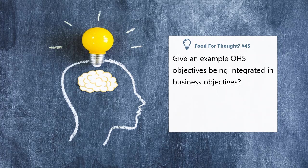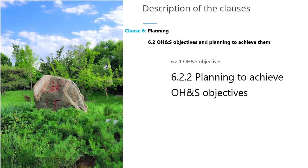Let's discuss another example. The business objective is to increase productivity and efficiency in the manufacturing process. The integrated OHS objective will be to reduce the incidence of workplace injuries and illness related to the manufacturing process by implementing safety measures and providing employee training. By reducing workplace injuries and illness, the organization can reduce downtime due to worker absence or injuries, minimize workers' compensation costs, and maintain high levels of employee morale and job satisfaction. To achieve this, the organization might implement safety protocols such as regular equipment inspections, hazard assessments, safety training, personal protective equipment, and promoting a culture of safety in the workplace.